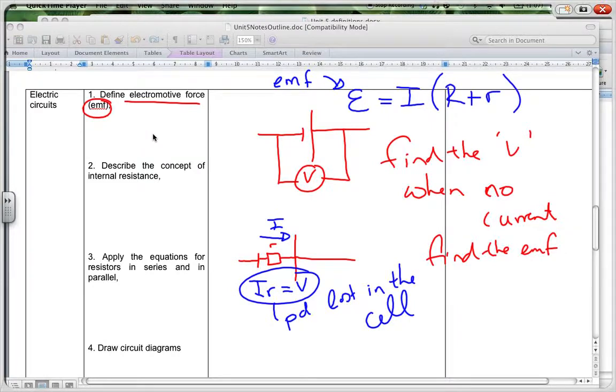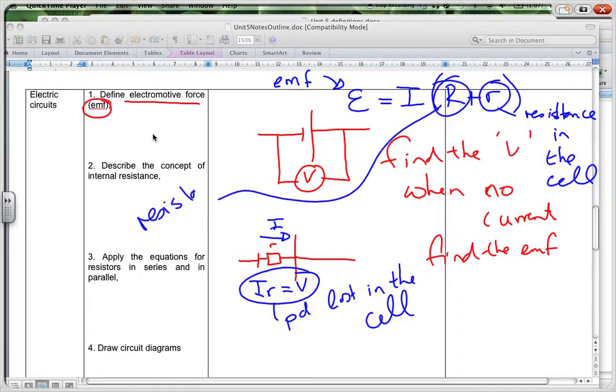So the small r over here is the resistance in the cell. This is the internal resistance in the battery, in the cell. And the big R is the resistance in the circuit.